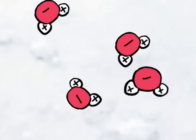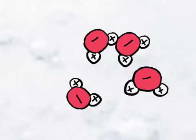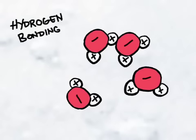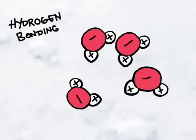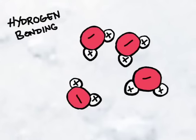Water molecules are not able to easily fly away from each other and become a gas. Water has the strongest of the intermolecular forces, called hydrogen bonding. Hydrogen bonding occurs when hydrogen is bonded to a very strongly electronegative element such as oxygen, which pulls away electrons from the hydrogen atom — just enough that hydrogen has a slightly positive charge and oxygen a slightly negative charge. This creates a very strong attraction with any other molecule that contains hydrogen bonded to something very electronegative.